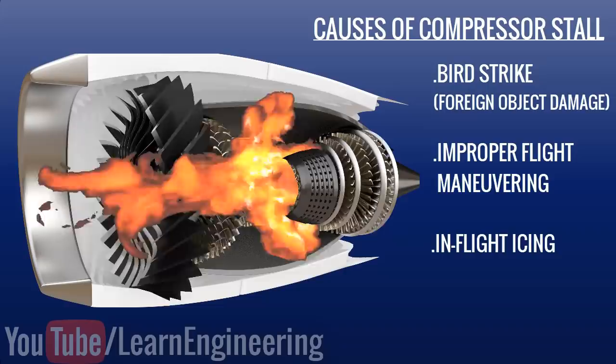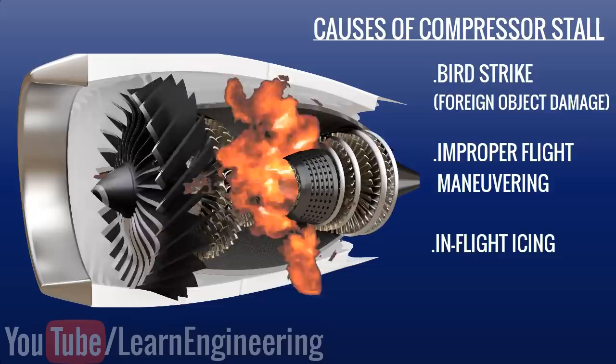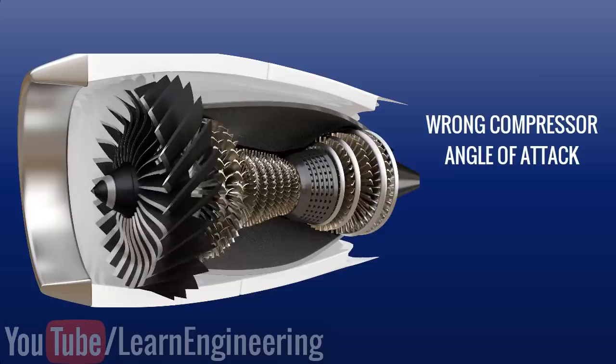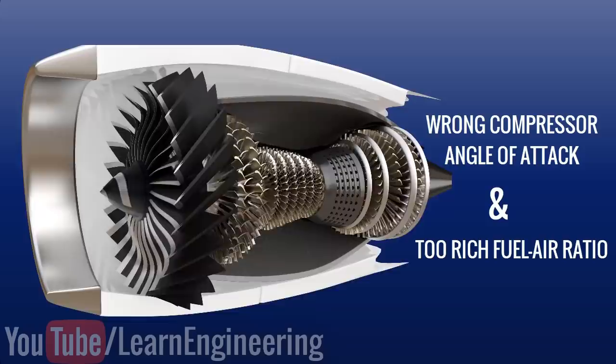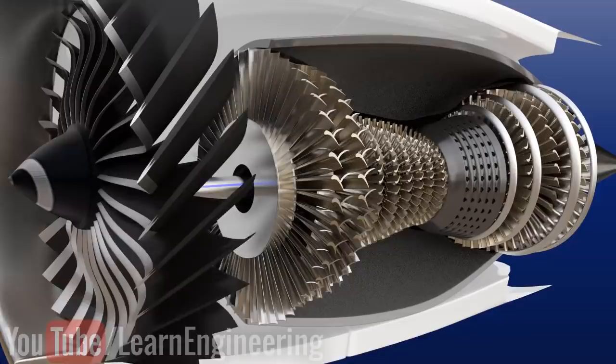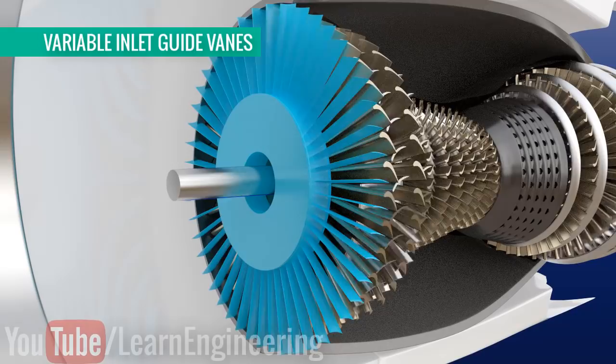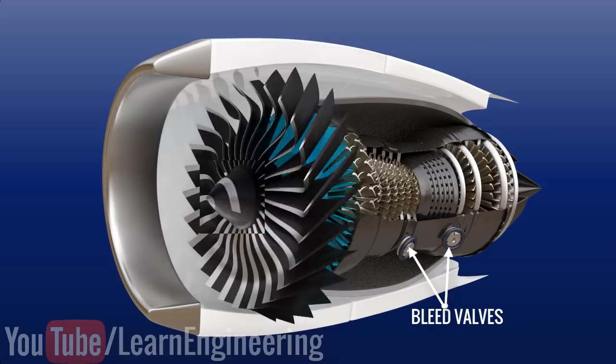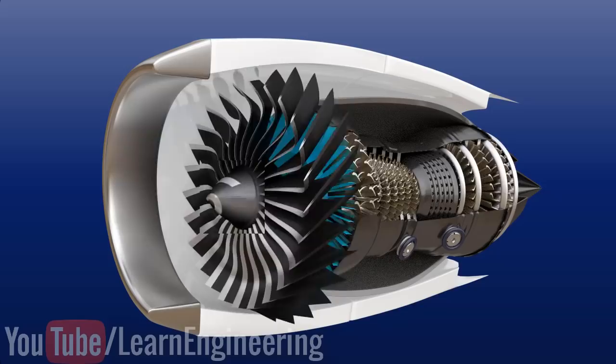How can pilots overcome such unpleasant events? Some compressor stalls are self-stabilizing, but if not, pilots should take necessary action. The wrong compressor blade angle of attack and a too-rich fuel-to-air ratio are the main causes of compressor stall — so by correcting these parameters, one can overcome it. Variable inlet guide vanes at the front of most jet engines can be adjusted to largely correct the angle of attack of the rotor blades. Additionally, bleed valves can blow air out and increase airflow to reduce the effect of a compressor stall, and limiting fuel supply by controlling the throttle is another technique.